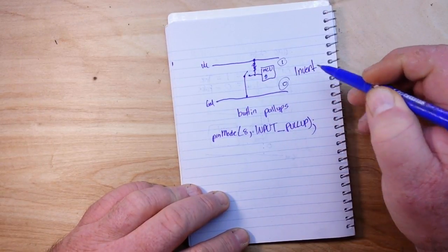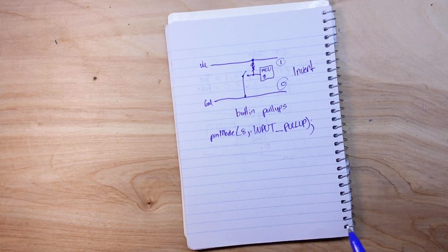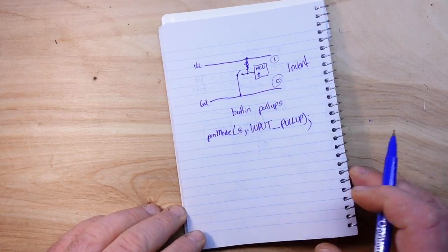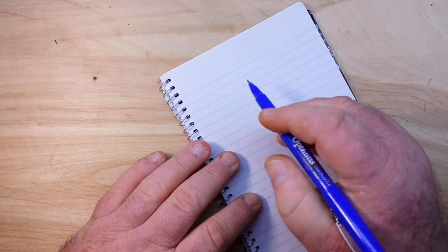So what is actually happening there is we are inverting the signal. So the input, the built-in pull-up resistors, will give us an inverted signal.